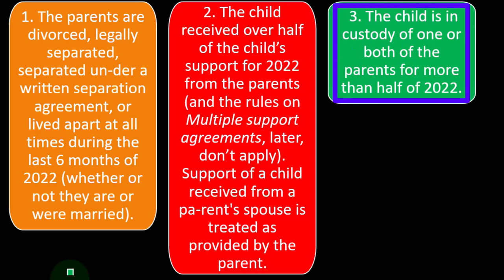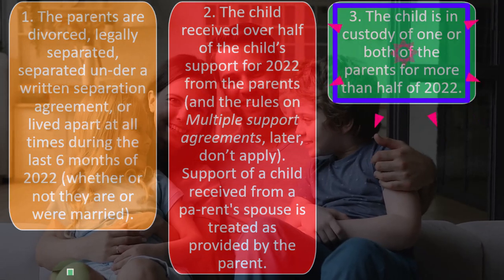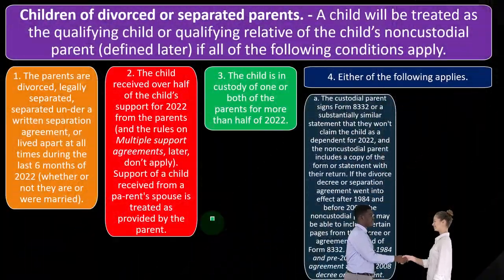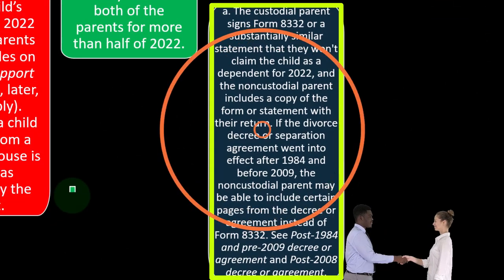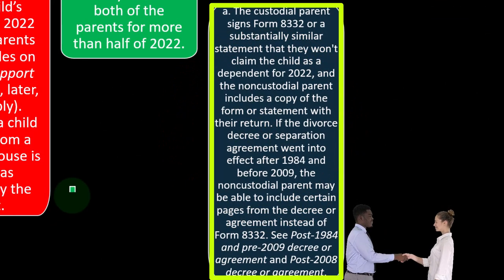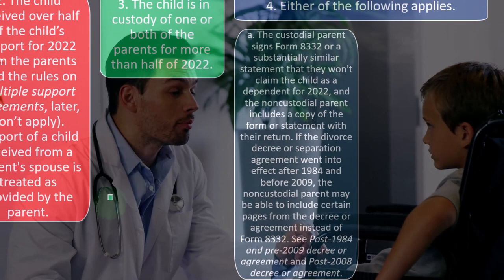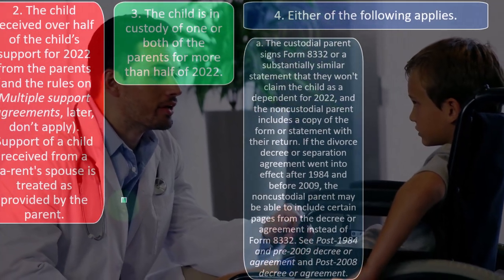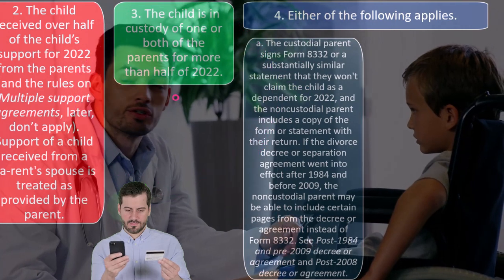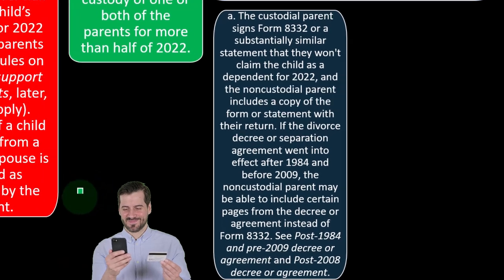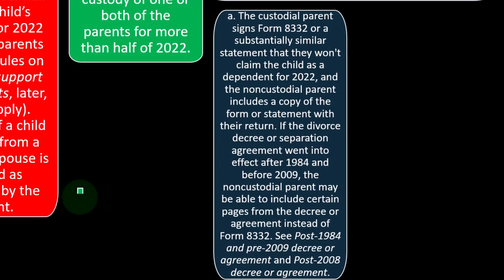Condition three: the child is in the custody of one or both parents for more than half of 2022. Condition four, either of the following applies. Option A: the custodial parent signs Form 8332 or a substantially similar statement that they won't claim the child as a dependent for 2022. So the custodial parent — who would typically be the one claiming the dependent — is basically saying they're not going to claim them. This might be part of a separation or divorce agreement, possibly because of a tax benefit in the arrangement.